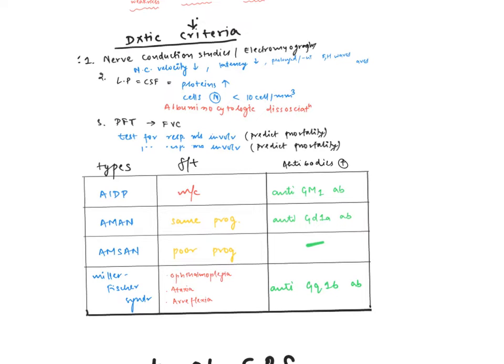Now we talk about antibodies present in various variants of GBS. First, acute inflammatory demyelinating polyneuropathy, the most common variant, has anti-GM1 antibody, which is a ganglioside. AMAN has the same prognosis, and the antibody is anti-GD1A. AMSAN has poor prognosis and does not contain any antibody. Miller-Fischer syndrome has a triad of ophthalmoplegia, ataxia, and areflexia, and it contains anti-GQ1B antibody.